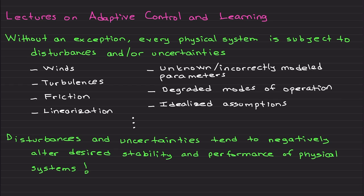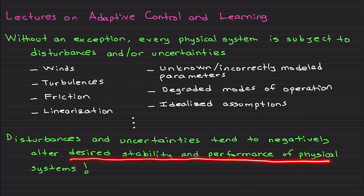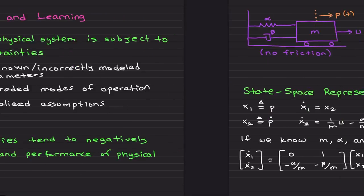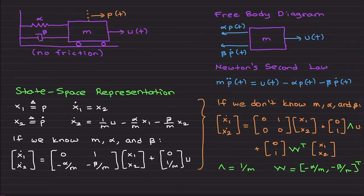These disturbances and uncertainties most of the time negatively impact the desired stability and performance of your physical system in control. So you need to deal with them. I would like to give you one of the simplest examples to understand uncertainties and how they pop up.